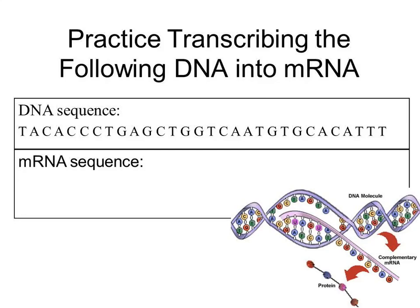You can practice transcribing DNA into RNA. It should be pretty simple — just make sure you use uracil anywhere you would normally use thymine. There's still adenine, cytosine, and guanine. They still pair up with what they normally pair up with, but uracil will pair to DNA's adenine.